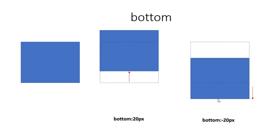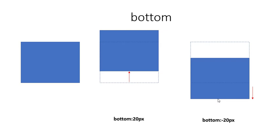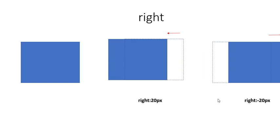The left property moves the element from the left by 20 pixels, as shown in the example, and the right property moves the element from the right. In the coming lessons we will learn how each position value works and how the offset properties work with them.